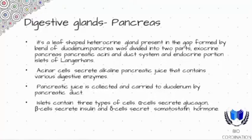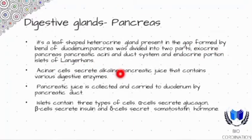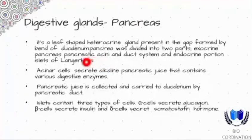So this is a mixed gland. It is divided into two parts: the exocrine part is the pancreatic acini with a duct system, and the endocrine part is the Islets of Langerhans. The pancreatic acini are the exocrine portion — secretion goes through a duct.